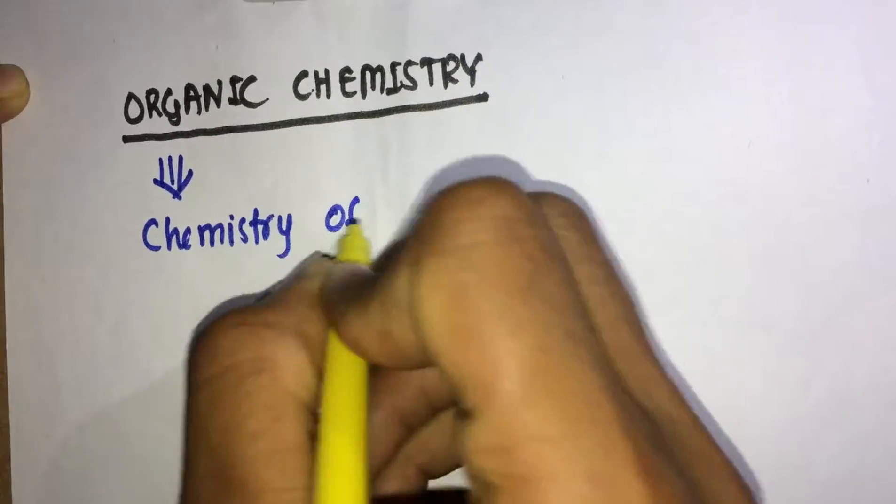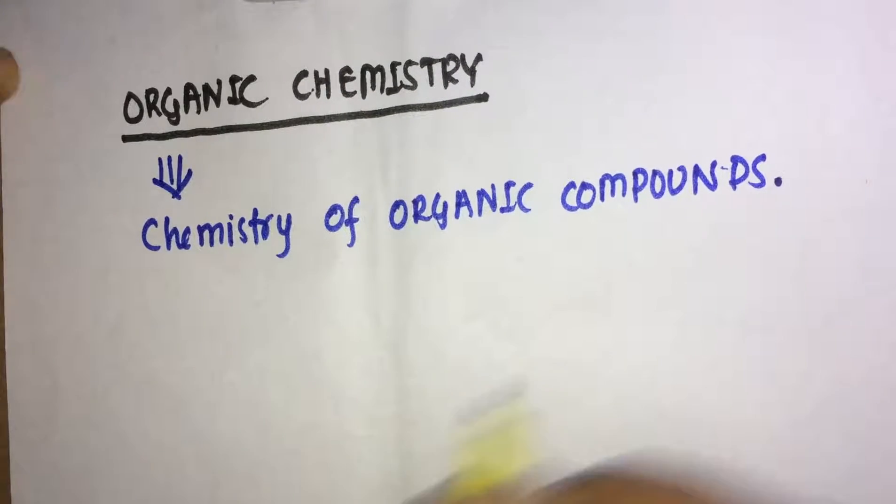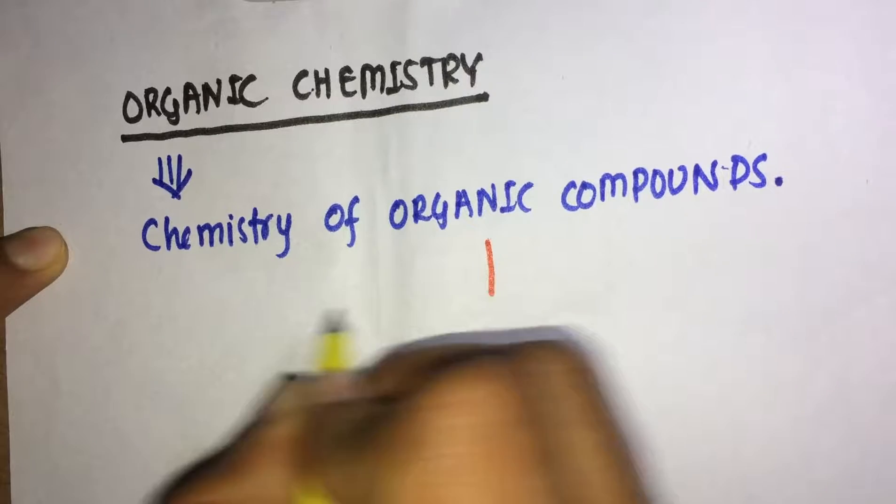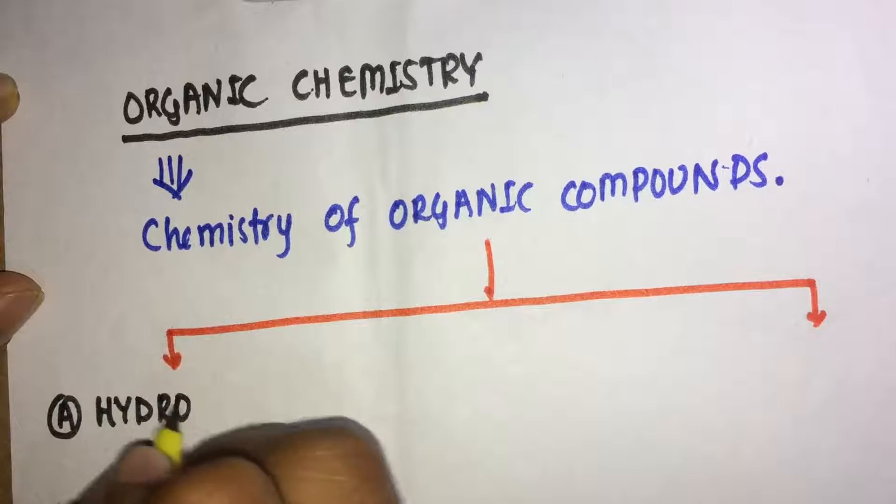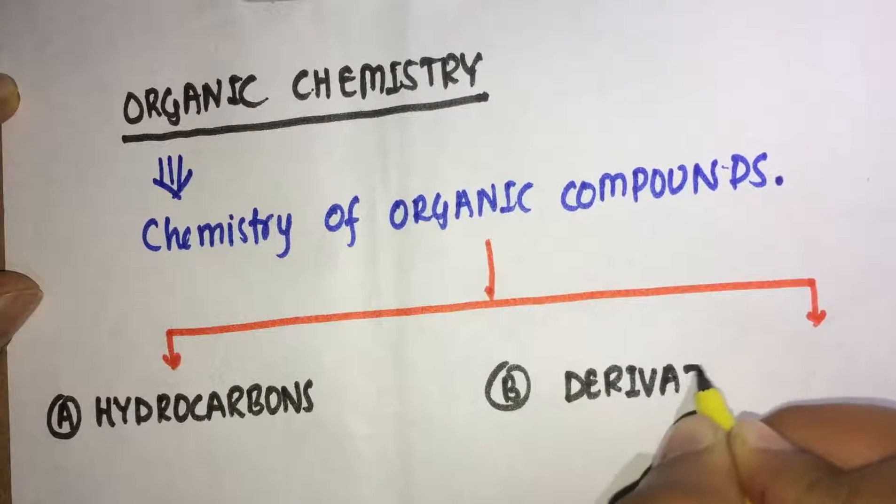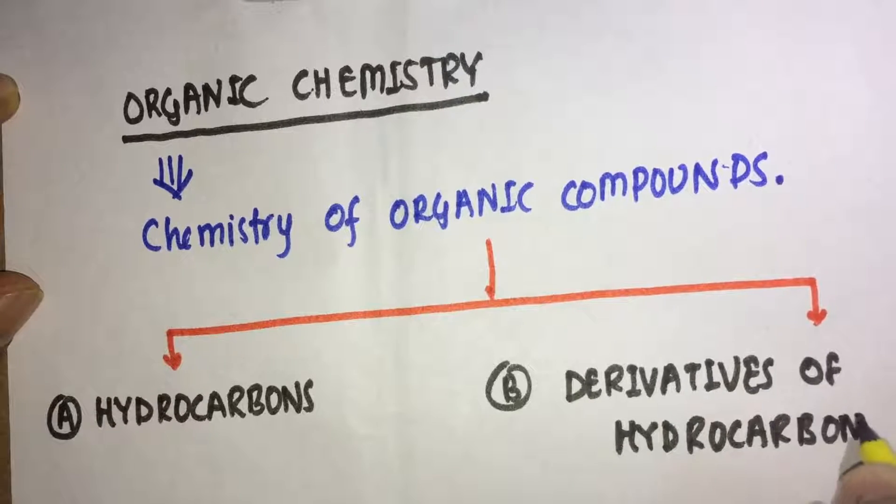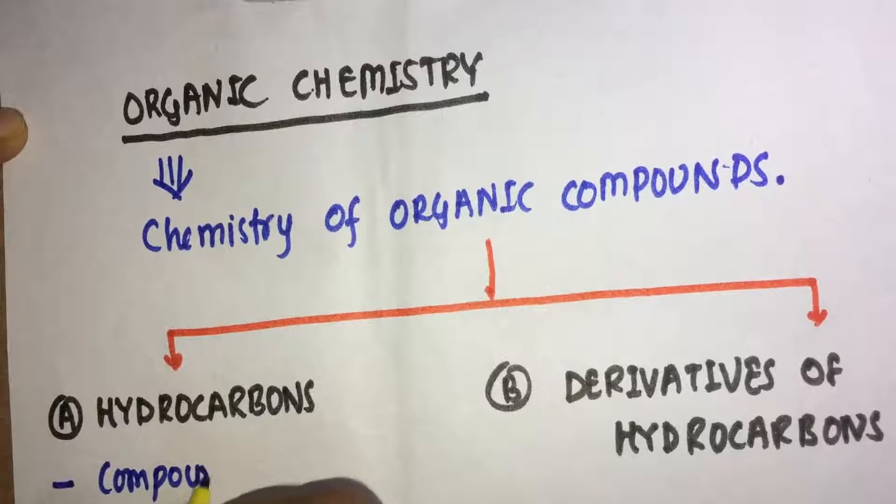Organic chemistry - the first thing which comes in our mind is what is organic chemistry? Basically, organic chemistry is chemistry of organic compounds. Here organic compounds can be studied under two subparts: the first part is hydrocarbons and the second part is derivatives of hydrocarbons.